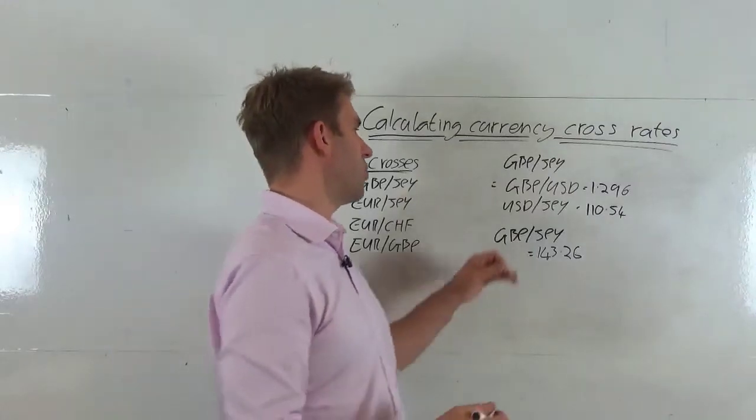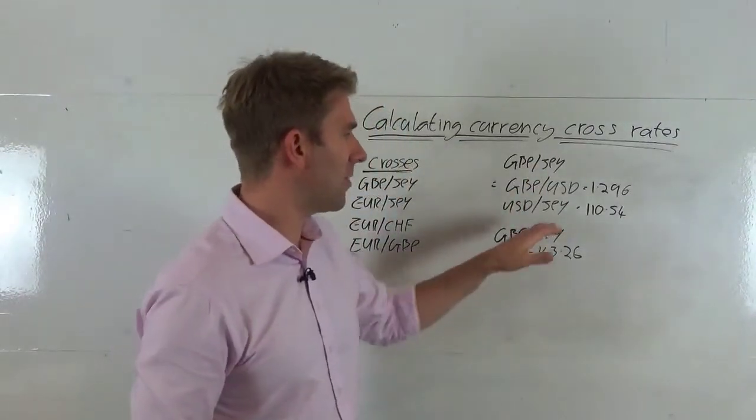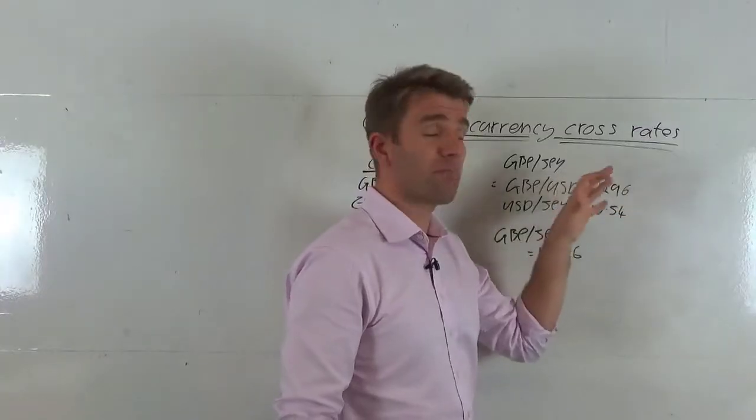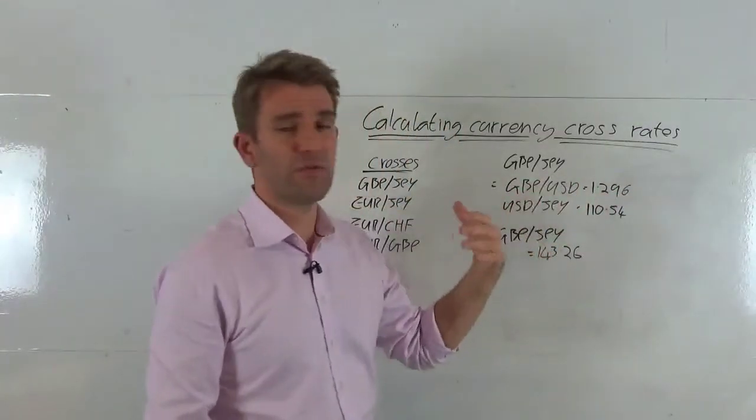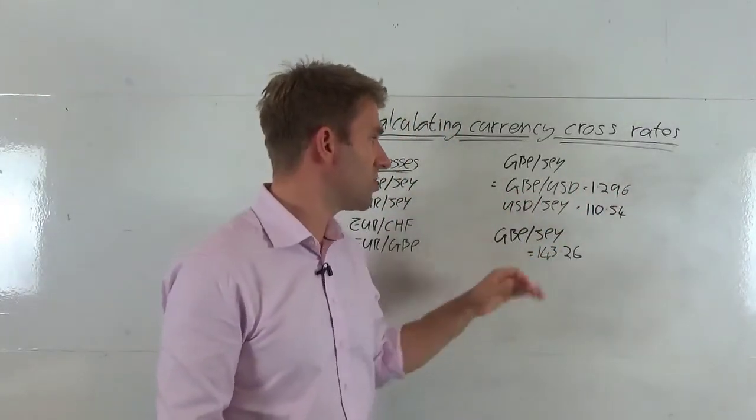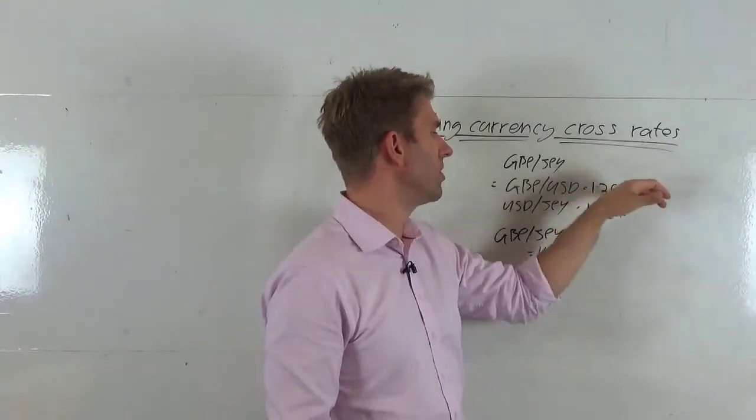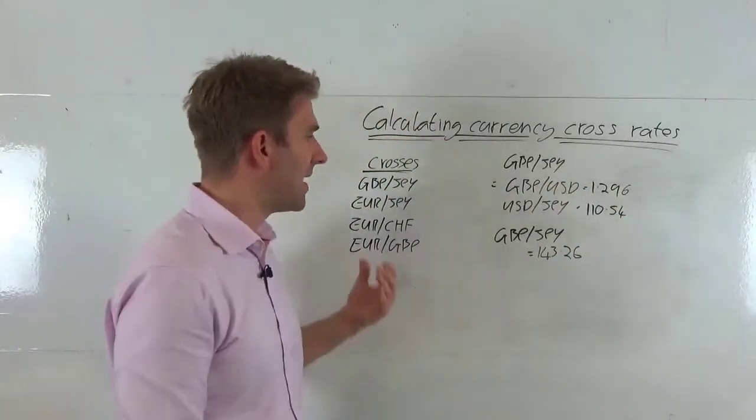First of all, we look at the pound US dollar rate and we say, okay, the current trading, the current price on the exchange, whether it's the bid price or the offer price, let's assume it's the offer price, is 1.296. Great, we drop that down.